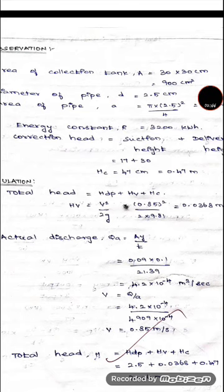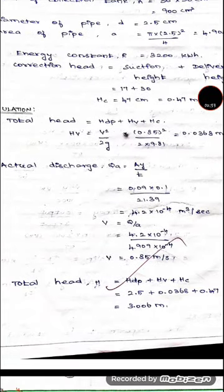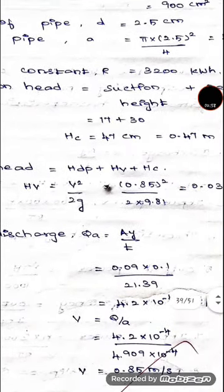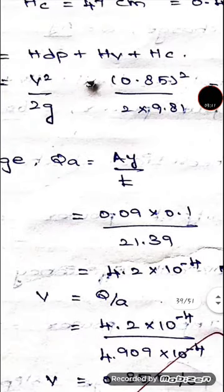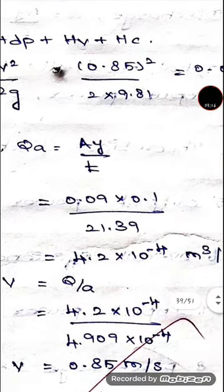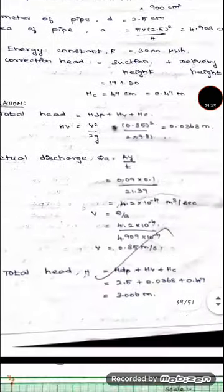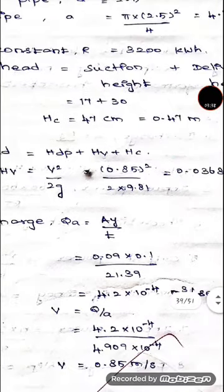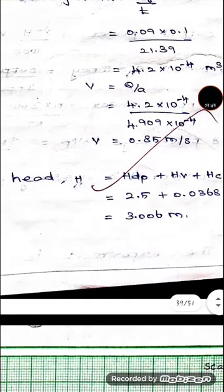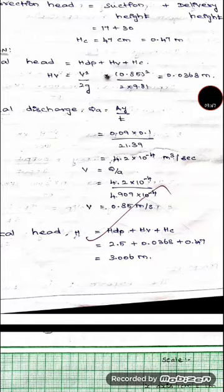To calculate the total head, we also need the velocity head, which is calculated as v²/2g. For that, we first calculate the actual discharge Q = A × h / t, where the area of the collection tank is substituted in meter square, the rise of water is 0.1 meter, divided by the time taken for the rise. This gives actual discharge in meter cube per second. Velocity is then Q divided by the pipe area A, giving v in meter per second. Total head is then calculated by adding the delivery head, velocity head, and correction head.